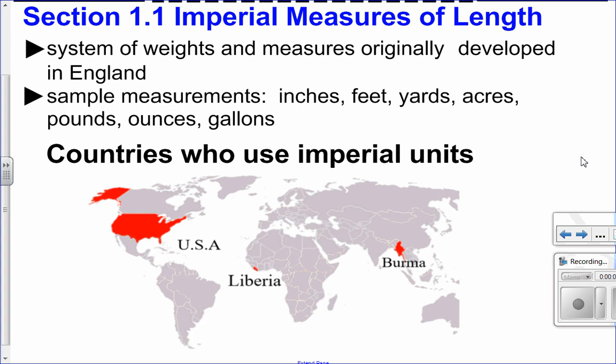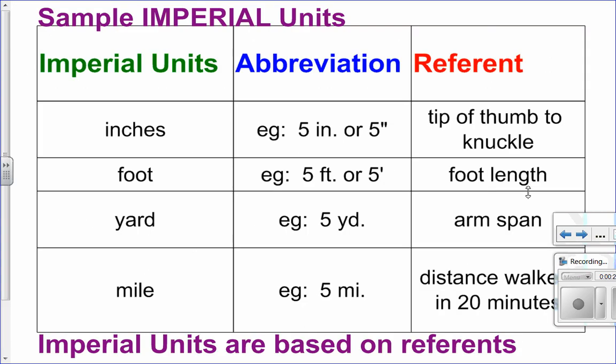So those are things like inches, feet, pounds, gallons. This is a system of weights and measures that was originally developed in England but to date only three countries use imperial units. So let's look at some examples.